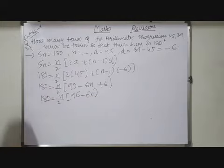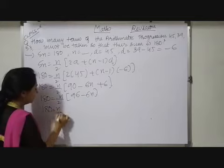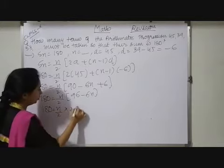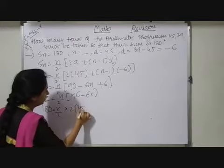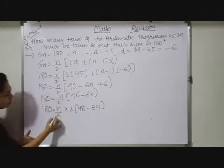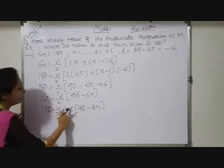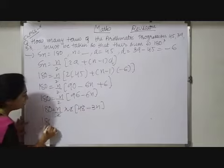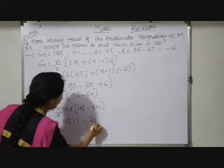Now if we will take out here 2 common, so now we have 180 equals to N by 2 into 2. So we will be 48, the 96, minus 3N. So as you may observe, 2 and 2 will be cancelled out. Now multiply N inside so we have 180 equals to 48N minus 3N squared.